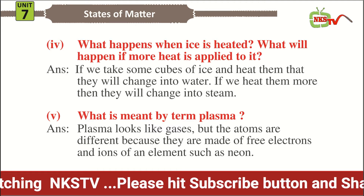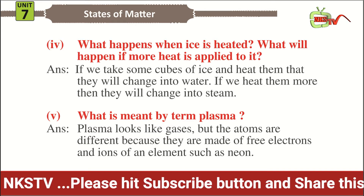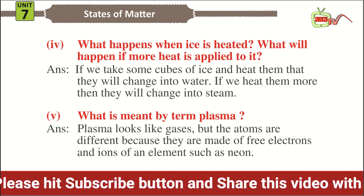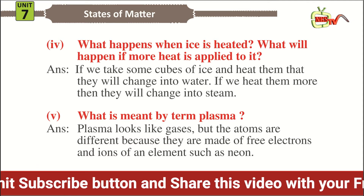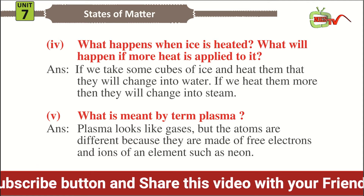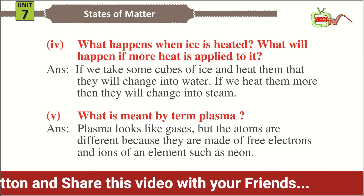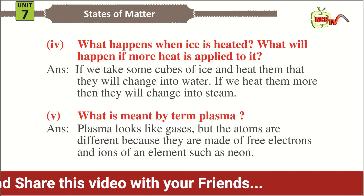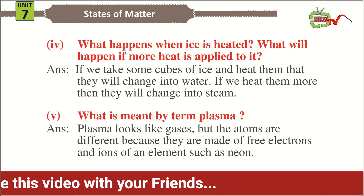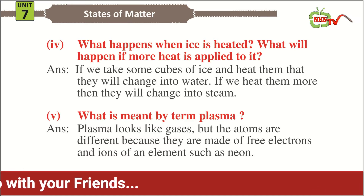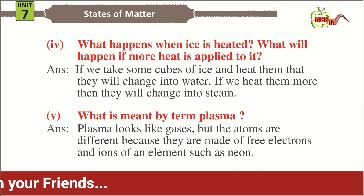Answer: if we take some cubes of ice and heat them, they will change into water. If we heat them more, then they will change into steam. Question number five: what is meant by the term plasma? Answer: plasma looks like gases but the atoms are different because they are made of free electrons and ions of elements such as neon.